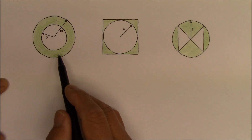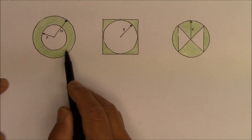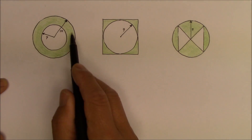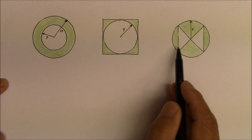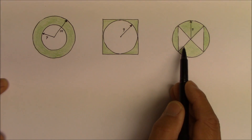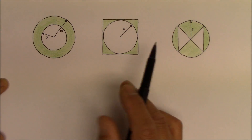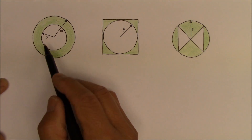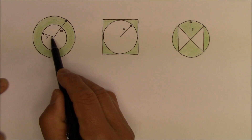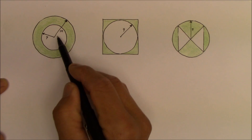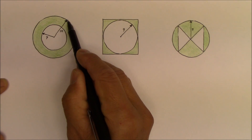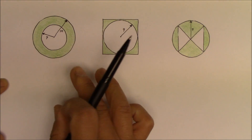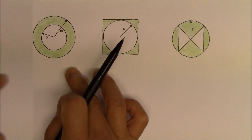First, find the area of the shaded region in green in this case. Go ahead and try it. This one has a radius of 7 and this one is 10. Start with that one.